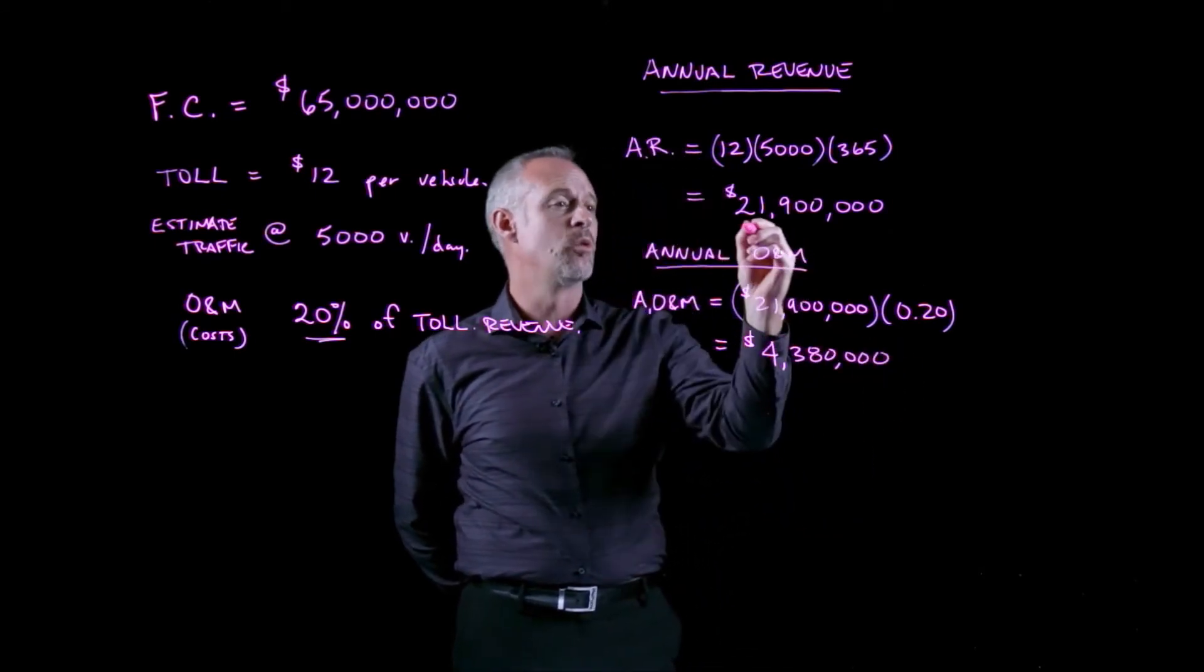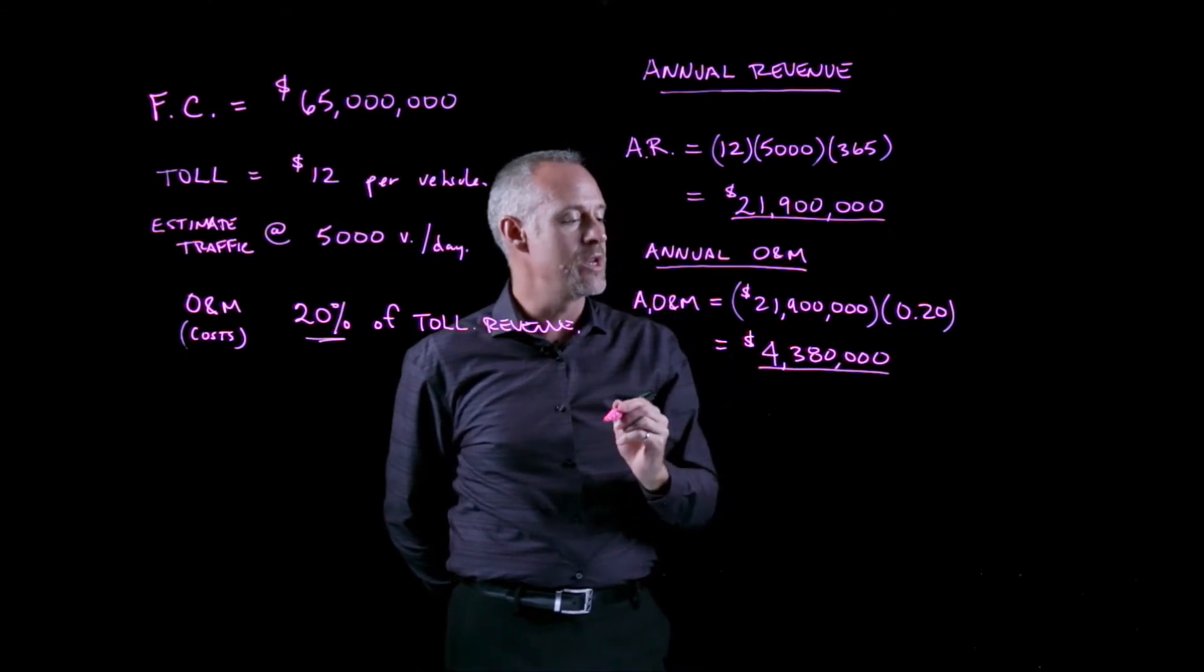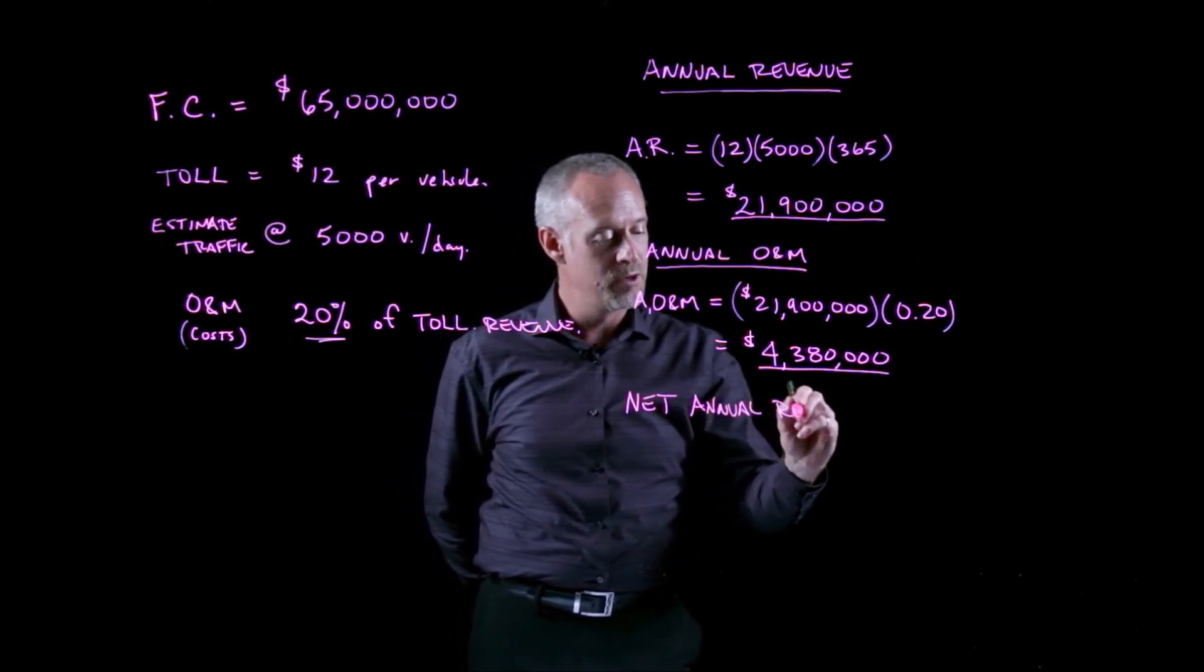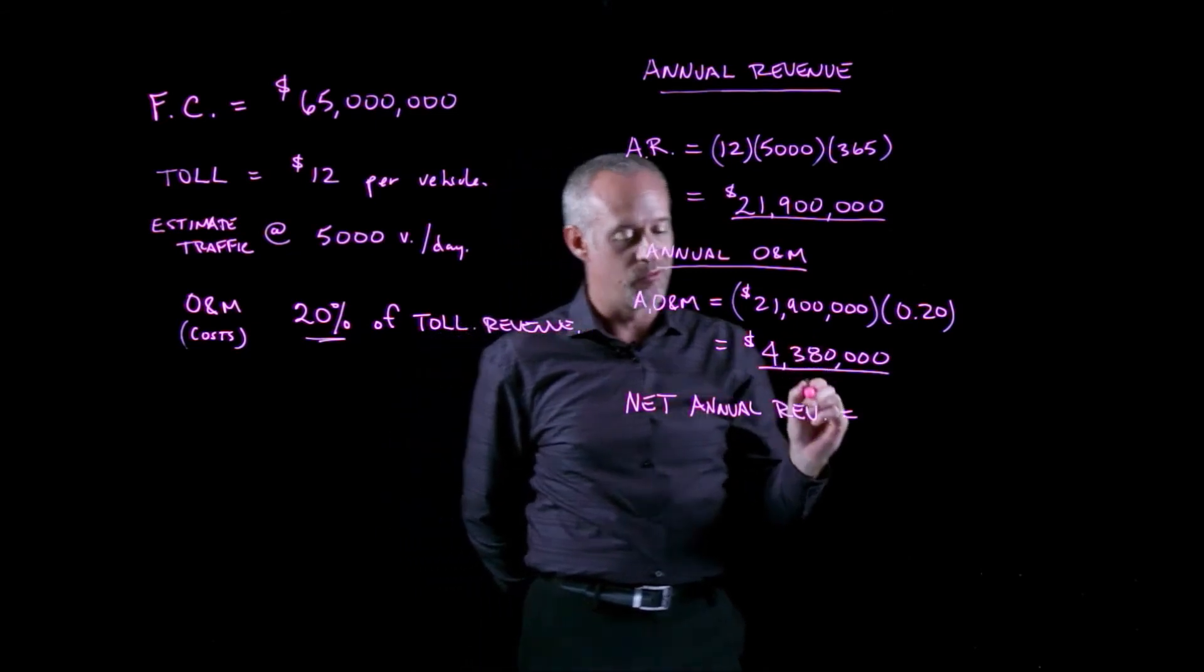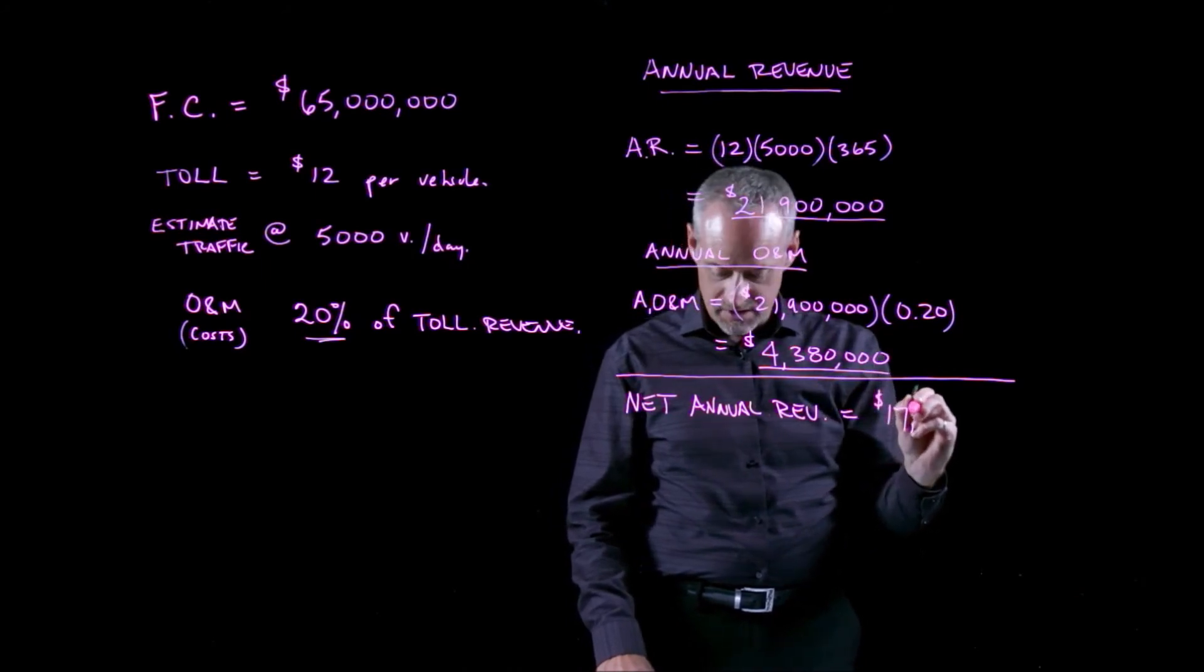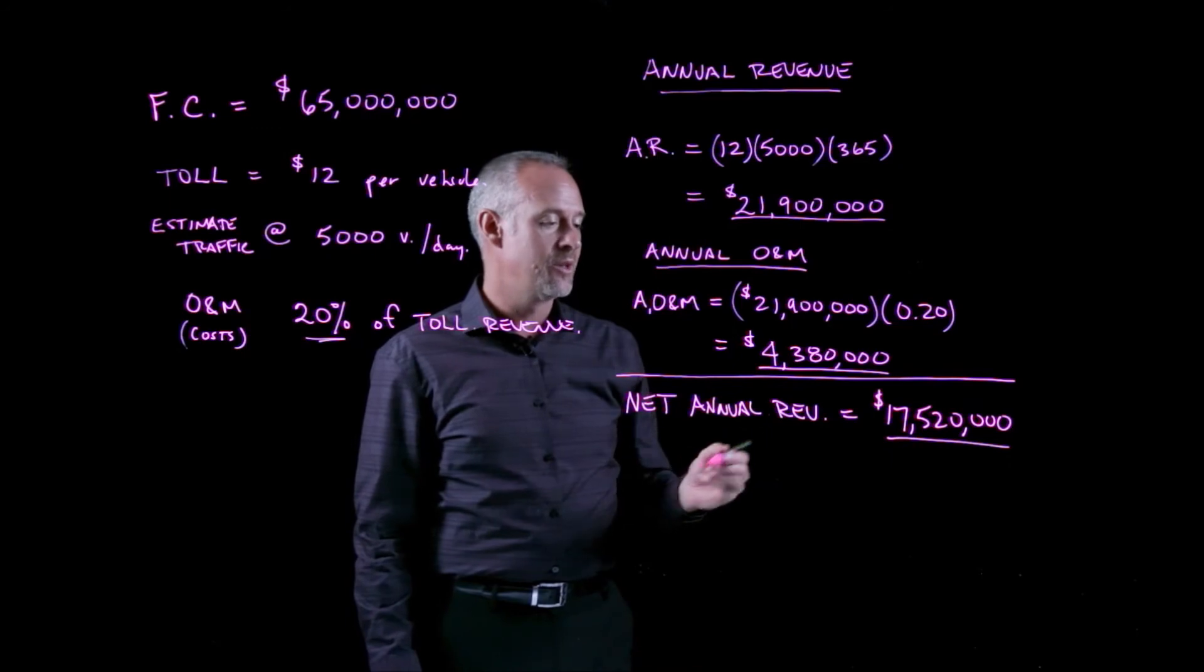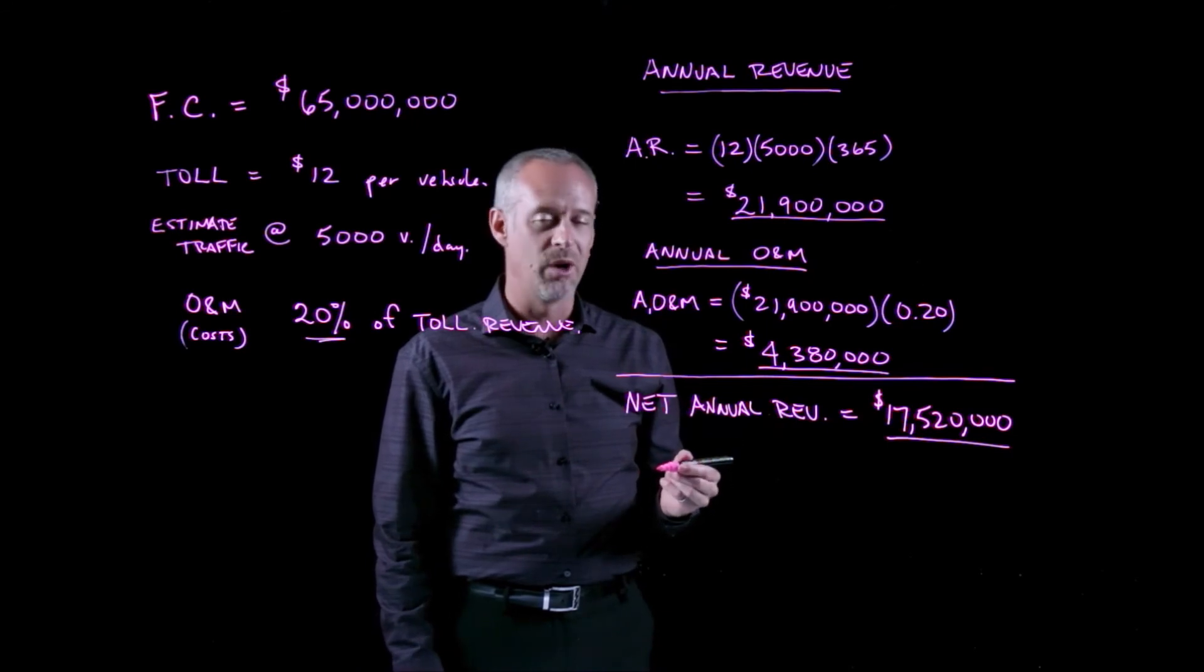So if we have an annual revenue of $21.9 million, annual operating and maintenance costs of $4.38 million, we can calculate the net annual revenue is going to be equal to simply the $21,900,000 minus the $4.3. So our net annual revenue is $17,520,000. Now, I haven't used any engineering economics to calculate this. This is just reading a word problem and calculating some numbers. Pretty straightforward.